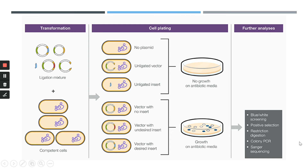Selection methods include blue-white screening, positive selection, restriction digestion, colony PCR, and Sanger sequencing. As mentioned, these methods can be combined with each other to get a better idea of whether the vector contains the correct insert DNA fragment.